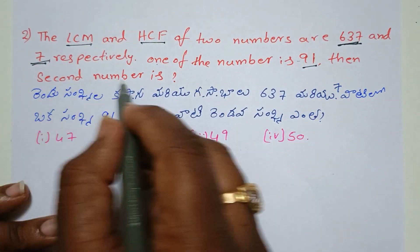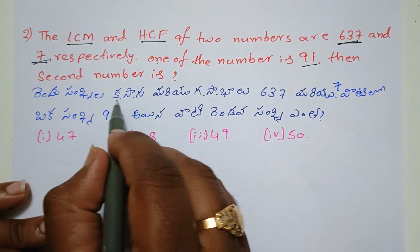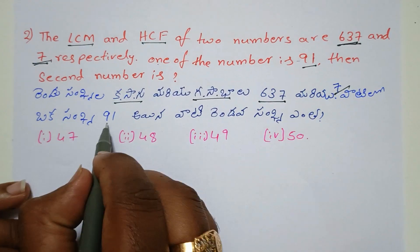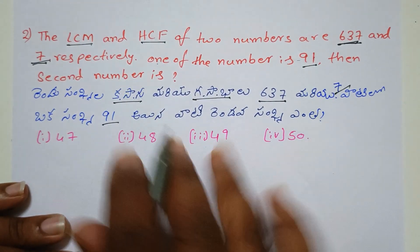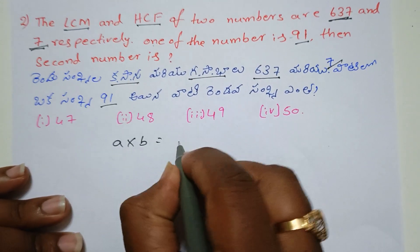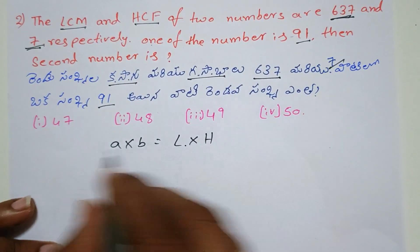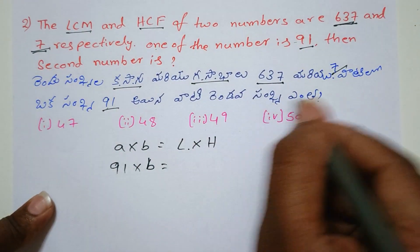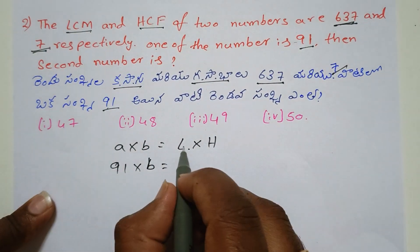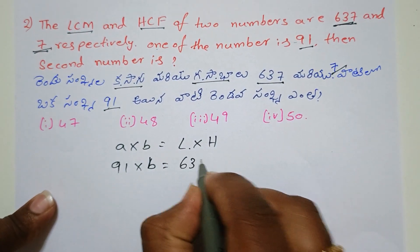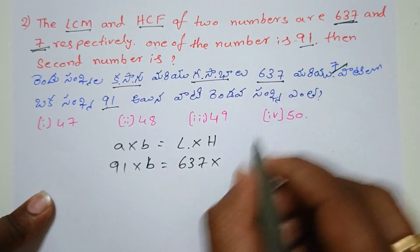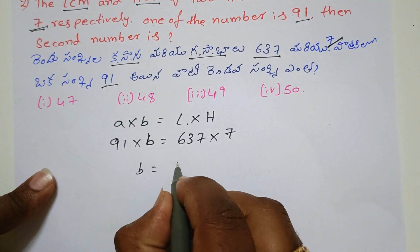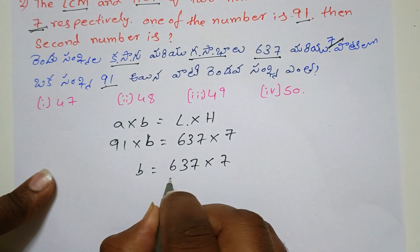One of the numbers is 91. Then find the second number. We write A into B equals LCM into HCF. So B equals 637 into 7 divided by 91.